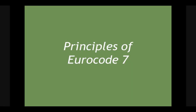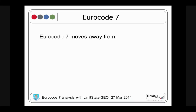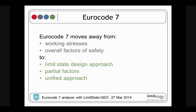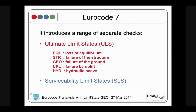Our aim today is to focus on Eurocode 7, so let's recap on the key relevant principles. Eurocode 7 moves away from traditional approaches that looked at working stresses and overall factors of safety, and moves to a limit state design approach using partial factors, with a broadly unified approach using the same factors for any geotechnical problem — whether a slope, retaining wall, or foundation. It requires explicit checks of the ultimate limit state and the serviceability limit state. The most common ULS checks are failure of the structure and failure of the ground, which is exactly what LimitState:GEO addresses.